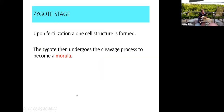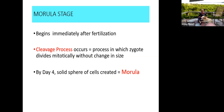So the zygote stage: upon fertilization, a one-cell structure is formed — that's what a zygote is. It immediately starts to enter into the cleavage process, meaning it goes through rapid mitotic division, dividing from one cell to two, two to four, four to eight, and so forth. At the end of that process we have the morula. The morula stage occurs as a consequence of the cleavage process and creates a solid mass of cells.